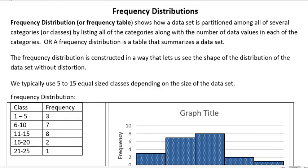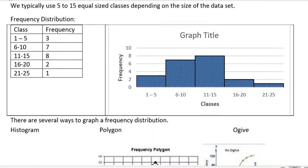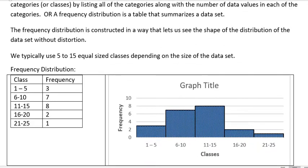But what a frequency distribution table does is it summarizes a data set, and we construct it in such a way that it lets us see the shape of the distribution without distortion, meaning we don't want to make it look different than it actually is. We want it to look true. And so typically we use 5 to 15 equally sized classes depending on how big our data set is.